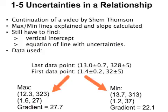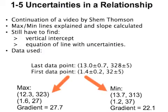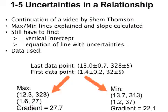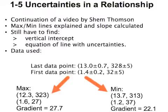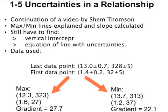But there are a couple things that you still need to be able to do. You still have to be able to find the vertical intercept of the graph, and to be able to write the full equation of the line, including the uncertainties. We're going to use the data from Shem's video to demonstrate how this is done.